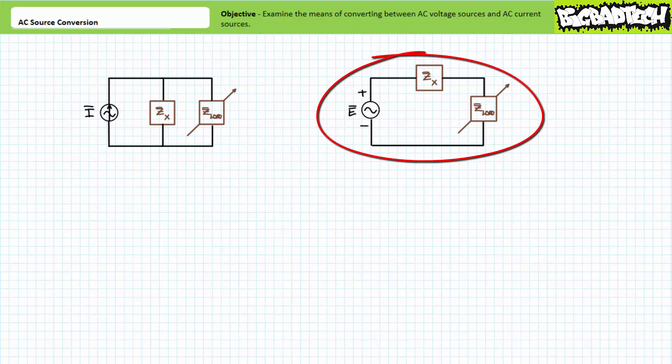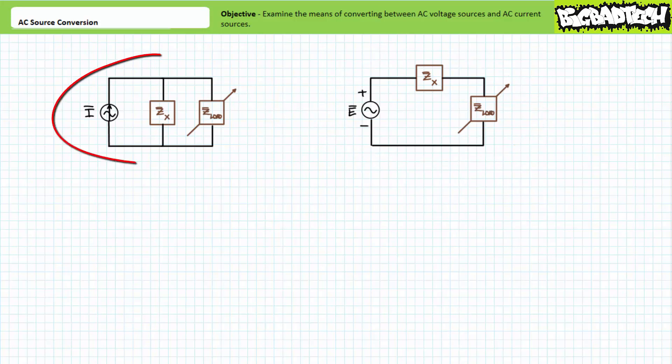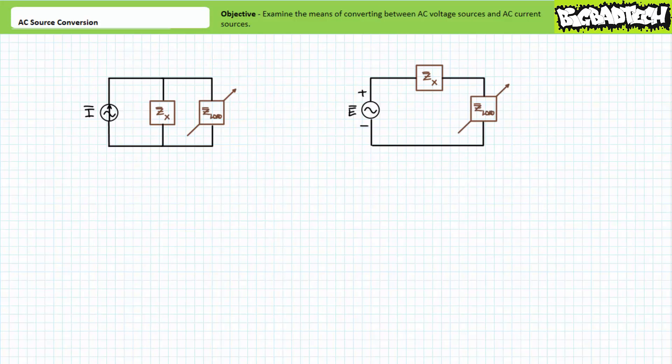Sometimes you want to use the voltage divider rule. Sometimes you want to use the current divider rule. Source conversion allows you this flexibility in choice.